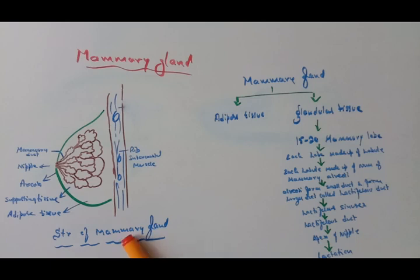In case of males they are rudimentary in structure, whereas in case of females they are functional, that means it produces the milk. Mammary glands are regulated by the endocrine system and become functional in response to the hormonal changes associated with pregnancy and childbirth.